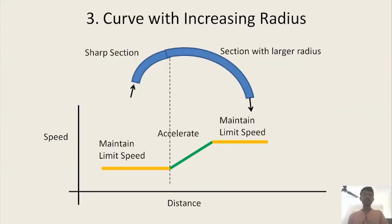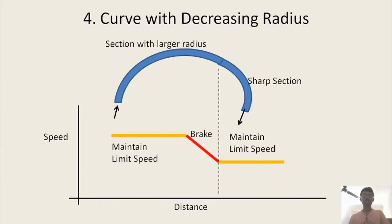In Case 3, you have a small sharp curve followed by a curve with a large radius. You first maintain the limit speed and then start accelerating to the next maximum limit speed - you cannot continuously accelerate but can accelerate up to the maximum limit the upcoming curve allows. In Case 4, it is the opposite: you come from a section with larger radius into a sharper section, so you have to brake to maintain the limit speed which is less than your current speed.